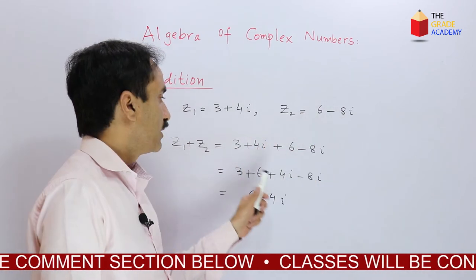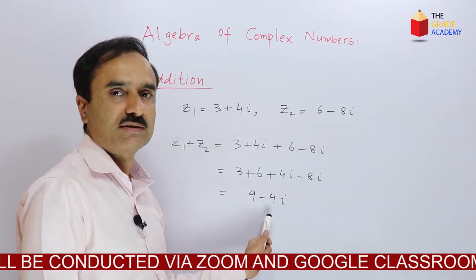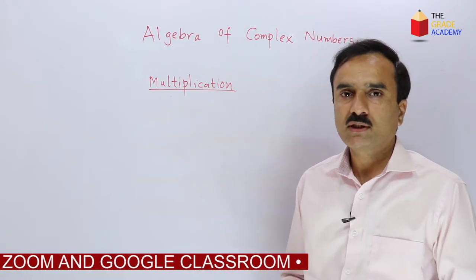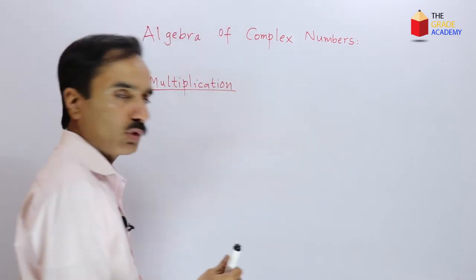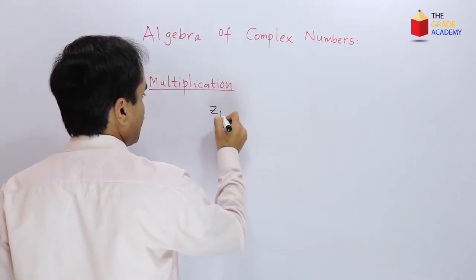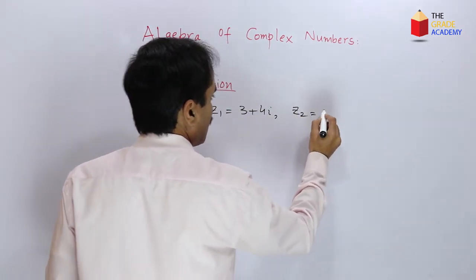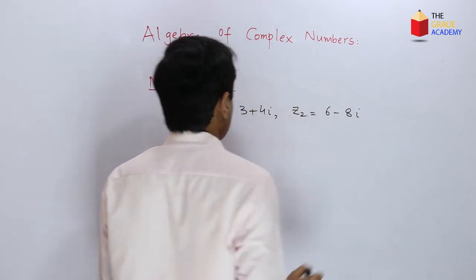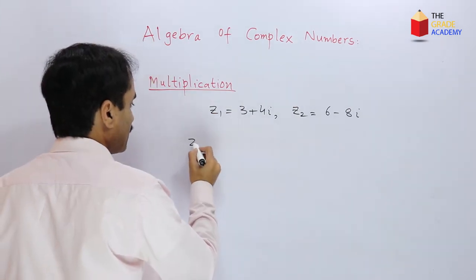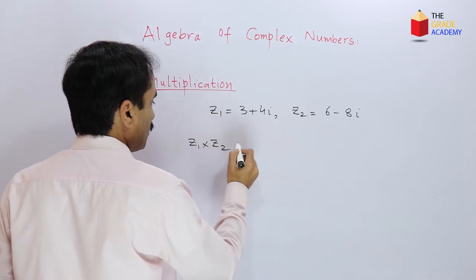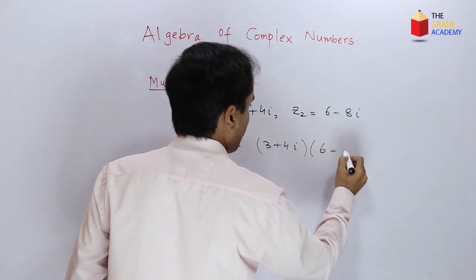In order to add any two complex numbers, just collect and rearrange their like terms and then simplify. Now let's talk about multiplication of complex numbers. Suppose we have z1 equal to 3 plus 4i and z2 equal to 6 minus 8i, and we are going to multiply these two complex numbers: z1 times z2, or (3 plus 4i) times (6 minus 8i).